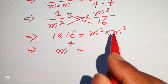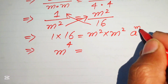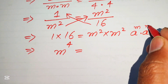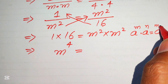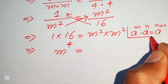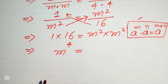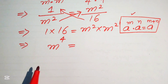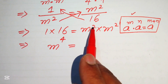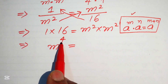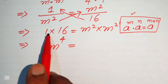We apply the exponential law: a^m × a^n = a^(m+n). Since the bases are the same, we add the exponents, so m² × m² equals m⁴. We now have m⁴ = 16.